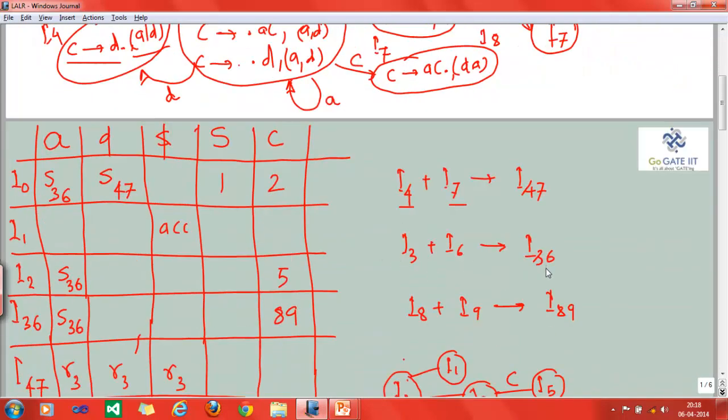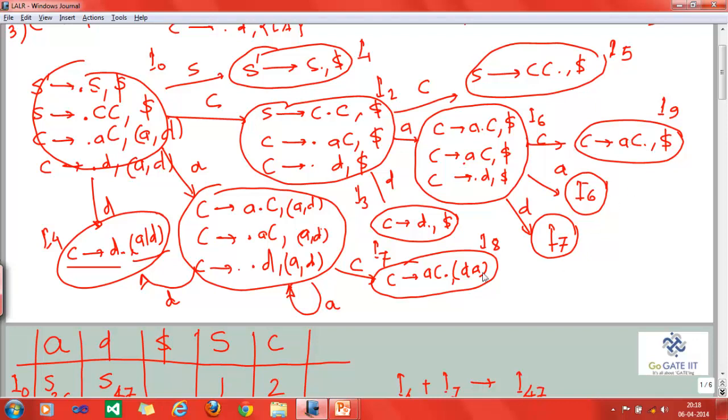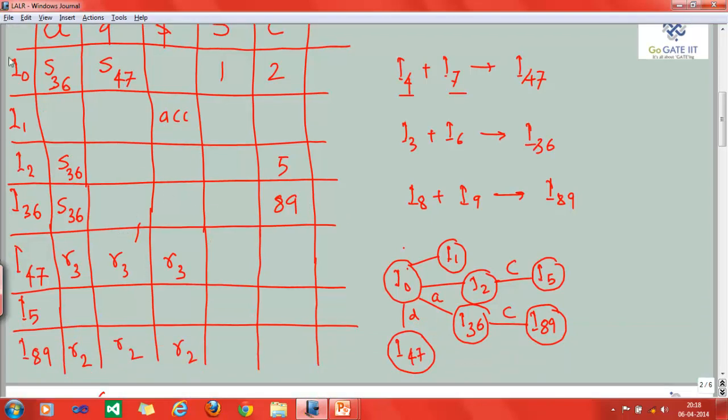Similarly, I8 and 9. We have I8 as C tends to AC dot with D and A, and here we have dollar with AC dot. So I8 and 9 can be combined, which will give you I89. Finally, you can say that we have I0, 1, 2, 36, 47, 5, and 89—total 7 states.